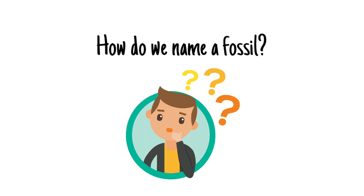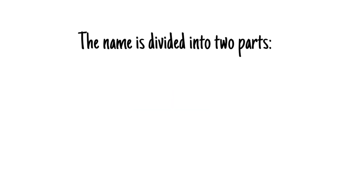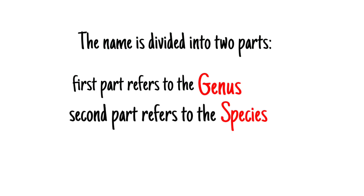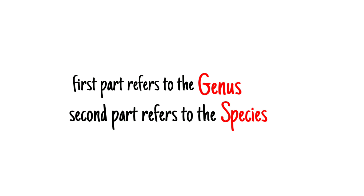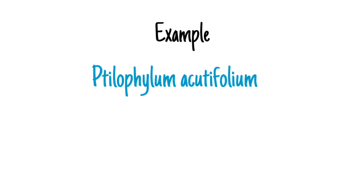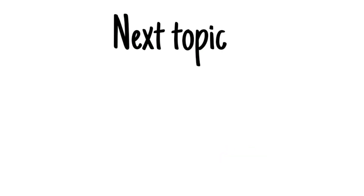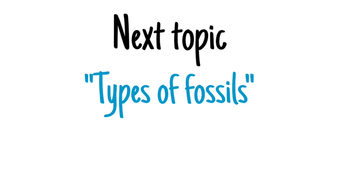You must be wondering how we name an organism that lived in the past. It is very simple — the name is divided into two parts. The first part shows its genus and the second part represents its species. For example, in the plant fossil named Telophilum acutifolium, 'Telophilum' is the genus name and 'acutifolium' is the species name.